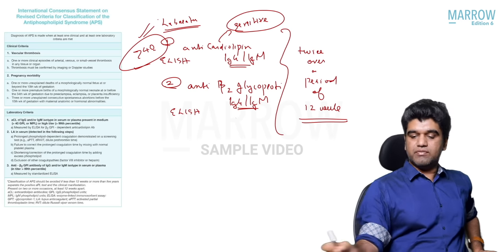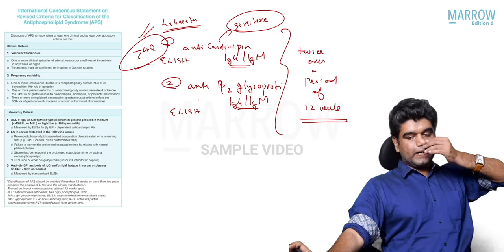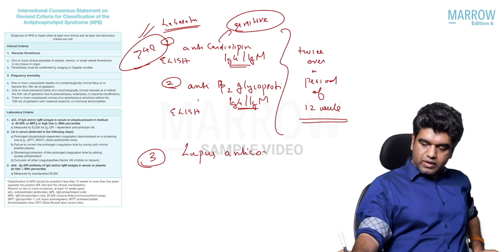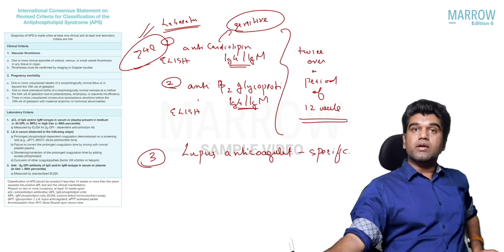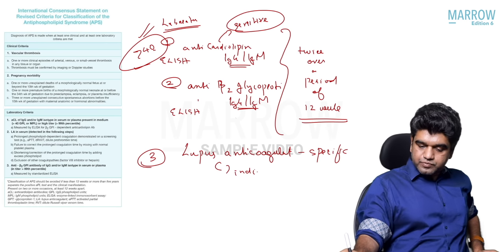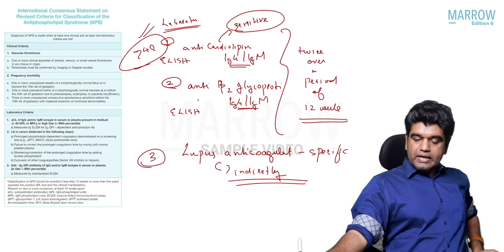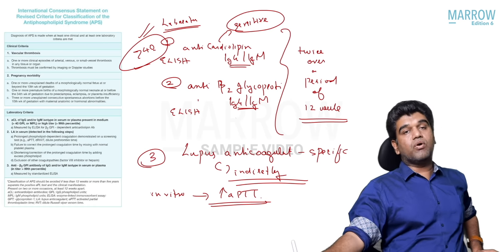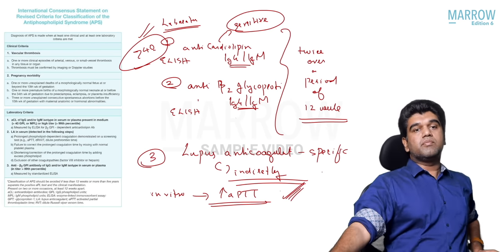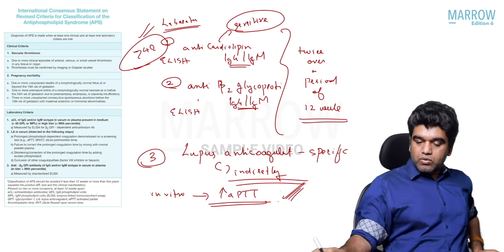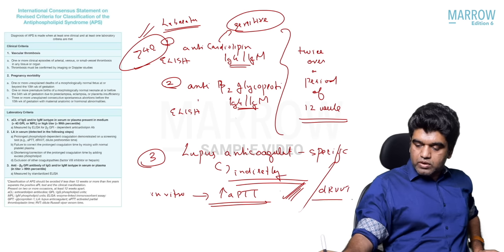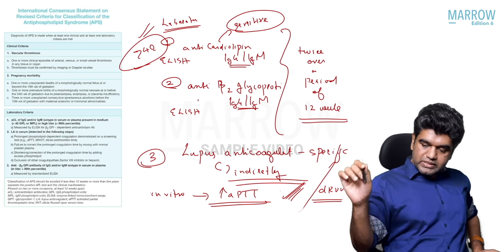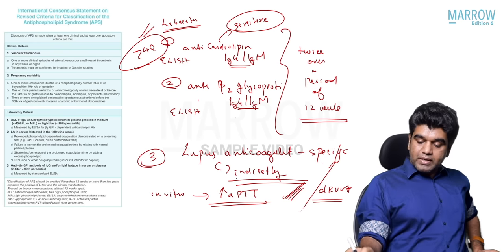A value of more than 40 is significant for anti-cardiolipin. The third antibody is called lupus anticoagulant — this is the most specific antibody. It is detected indirectly by its potential in vitro to increase APTT. It can also prolong the diluted Russell's viper venom test, DRVVT. So lupus anticoagulant is indirectly detected by prolongation of APTT or DRVVT.